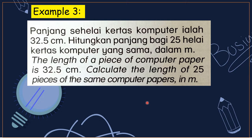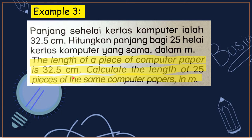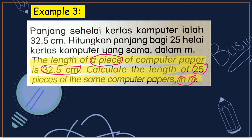Example 3. The length of a piece of computer paper is 32.5 cm. Calculate the length of 25 pieces of the same computer papers in meter. The first sentence tells you that one piece of paper is 32.5 cm. Now you need to calculate the length for 25 pieces, and the final answer is in meter.